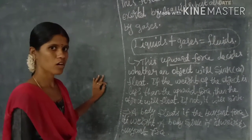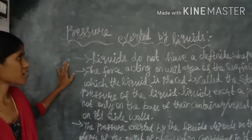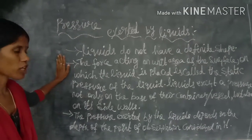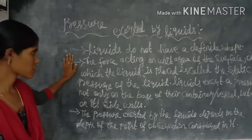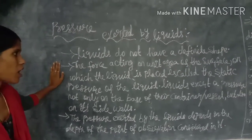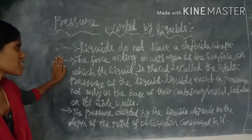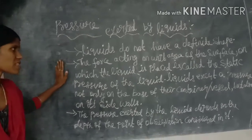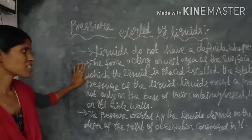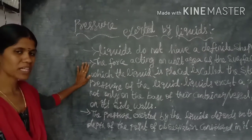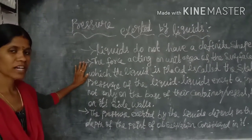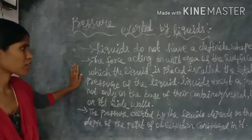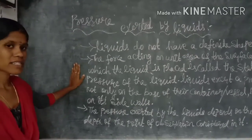The pressure exerted by liquids: liquids do not have a definite shape. The force acting on unit area of the surface on which the liquid is placed is called the static pressure of the liquid. Static means the liquid is in a rest condition.